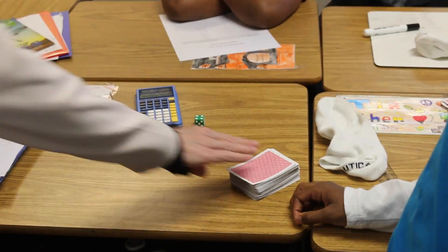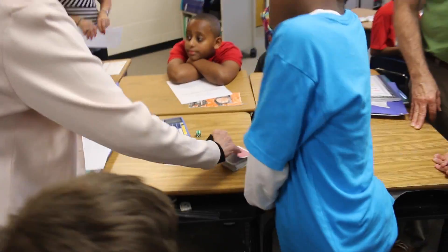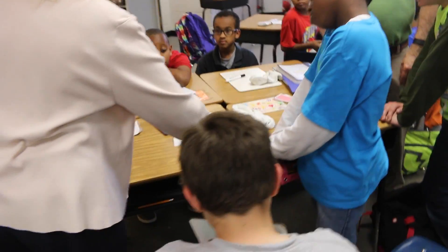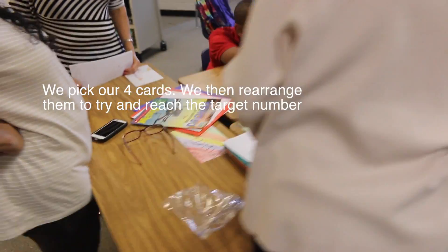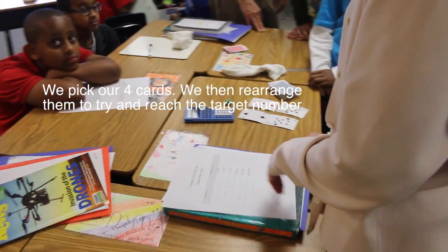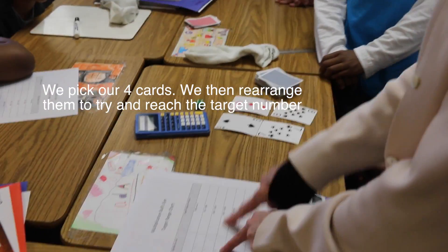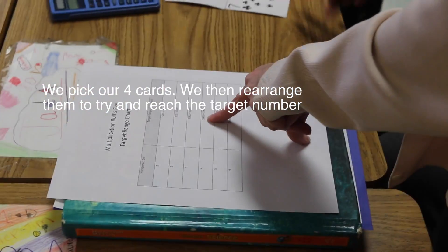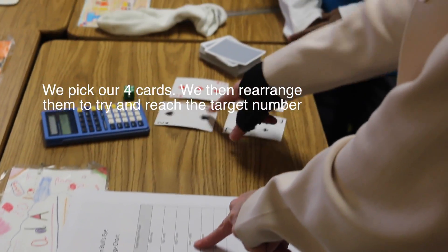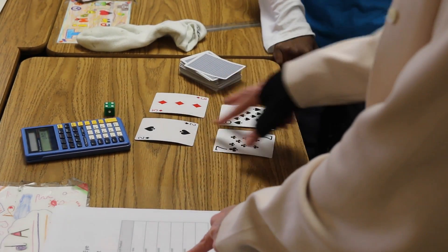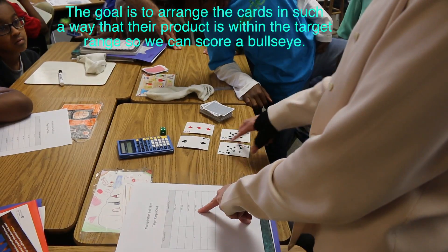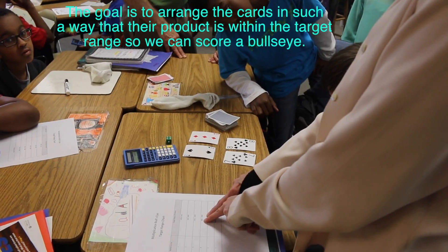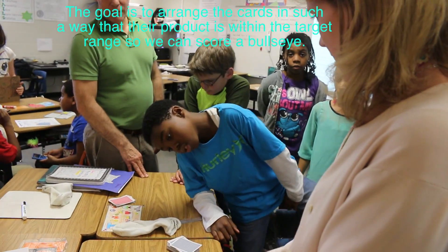I have to find a number. I'm going to turn over four cards—let's get some big cards. These are my four cards that I have, and my target range is 3,000 to 5,000. So I have to come up with a number when I multiply a two-digit number by a two-digit number to hit a range between 3,000 and 5,000.